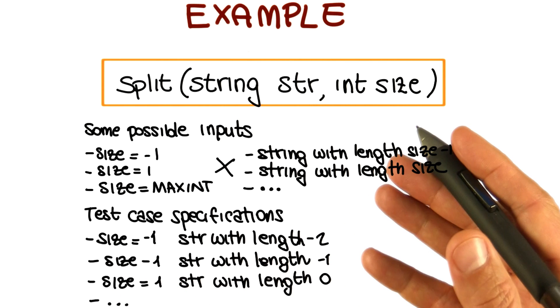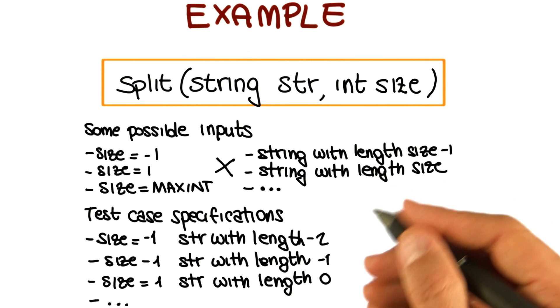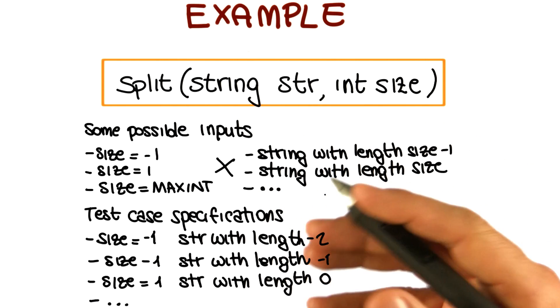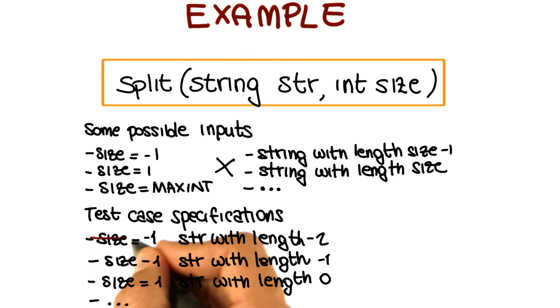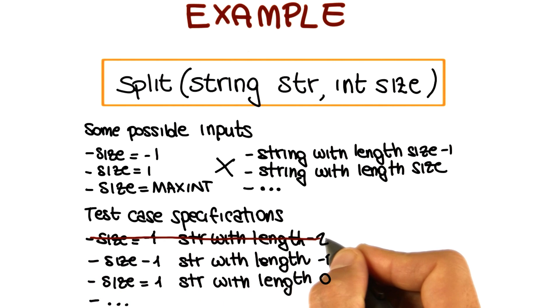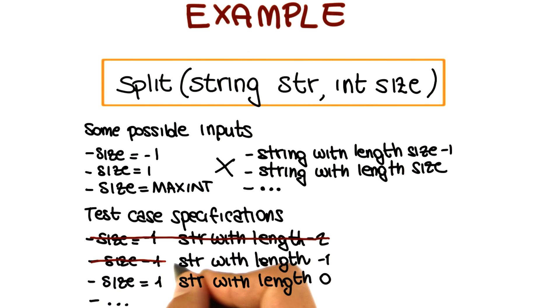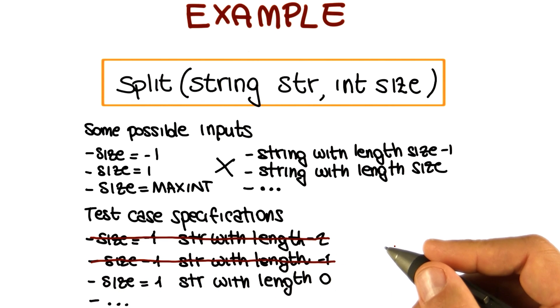But one thing I want to point out is that if we just go in this straightforward and brute force sort of way, we will obtain many combinations that don't make any sense. Like, for example, this combination which doesn't make any sense because we cannot create a string with length minus two. Similar for this combination because, by the same token, we cannot create strings with length minus one.